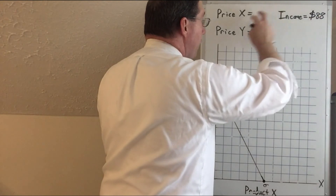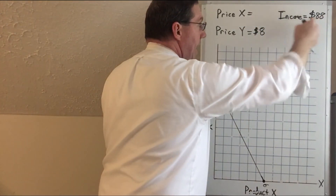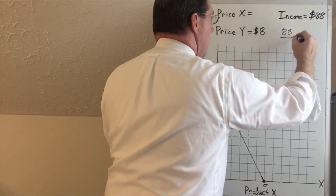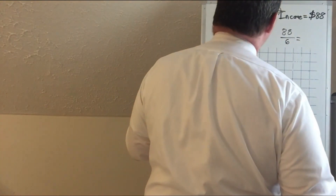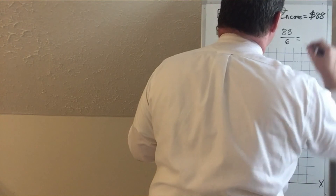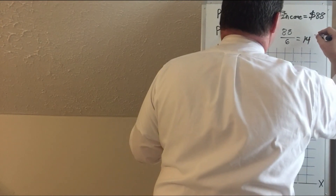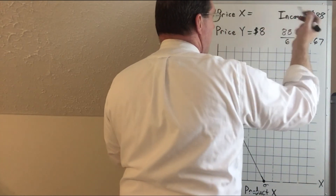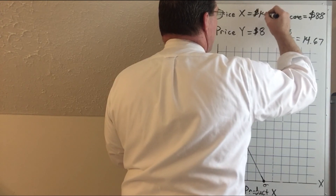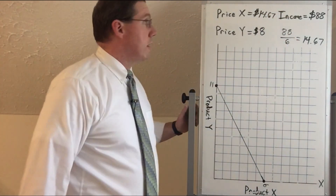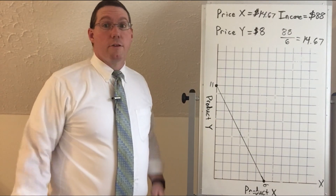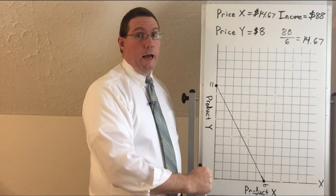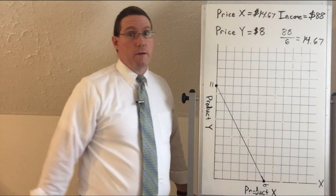Now that we know the income is $88, we can find the price of X. With $88, this household can purchase 6 units of X, so we divide $88 by 6, which equals approximately $14.67. So the price of good X is about $14 and 67 cents. You can either create a budget line given two prices and an income, or given a budget line, work backwards to find income and the prices of the products.